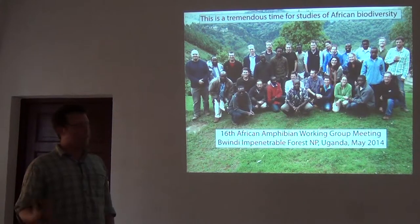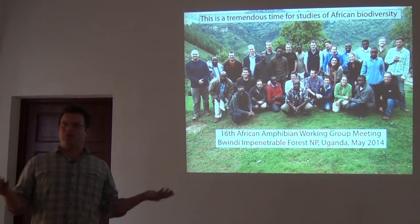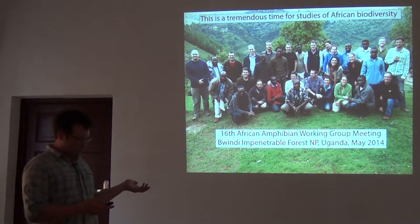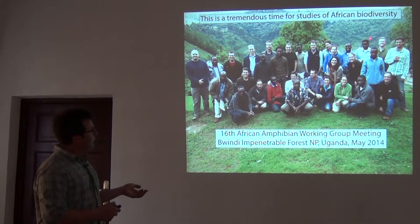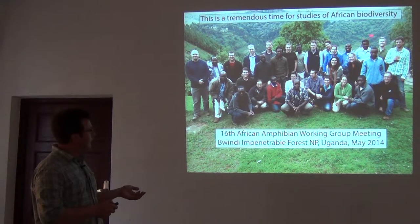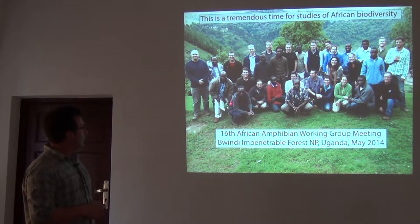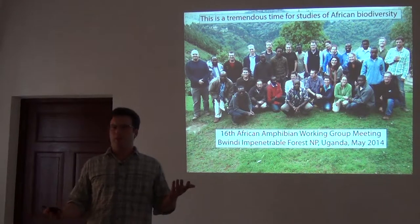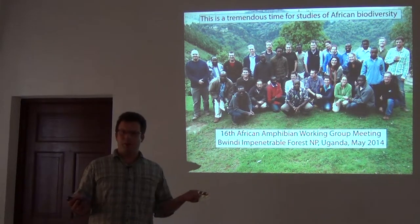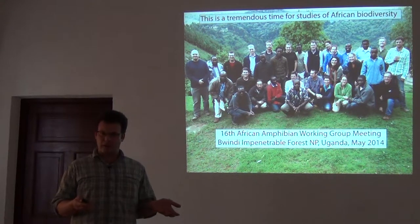This is the African amphibian working group meeting from May of last year. You can see that it looks really different. In this training group in Uganda, we have people like Toby from Gabon, Daniel who works for National Parks in Rwanda, people working for WCS, people from Congo, and Matias from Uganda. This is exactly the type of diverse network we want to build to study biodiversity on a truly grand scale.